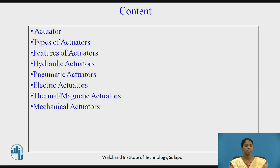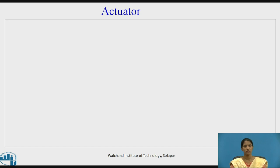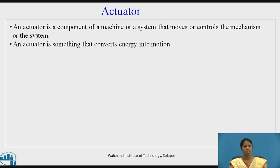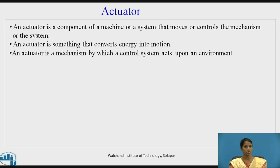So what is an actuator? An actuator is a component of a machine or a system that moves or controls the mechanism or system. An actuator is something that converts energy into motion. An actuator is a mechanism by which a control system acts upon an environment.